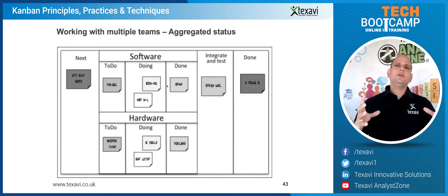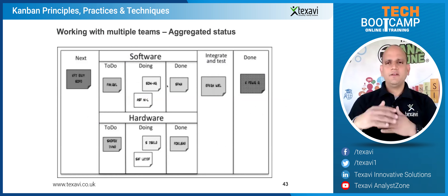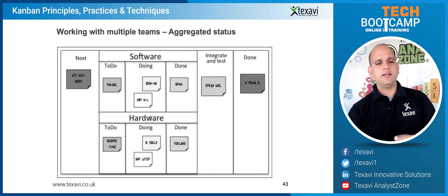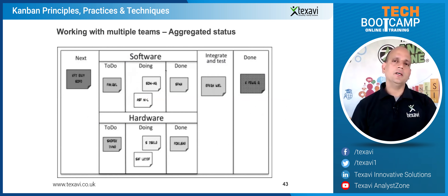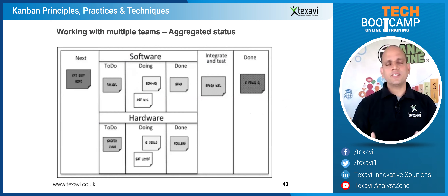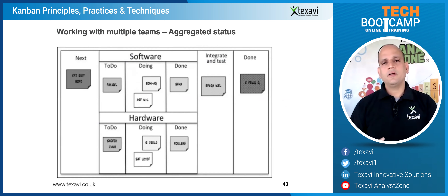We were talking about how you could club and merge different teams and different work streams in one Kanban board, and this is another example of that. If you are starting a project which has a software component as well as hardware — for example, you need to procure some infrastructure, buy some servers, have some client machines, and have control agents on the hardware side.